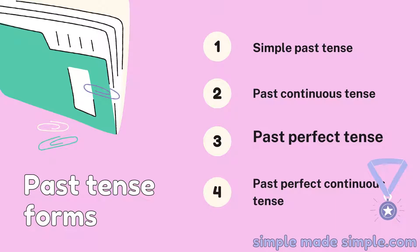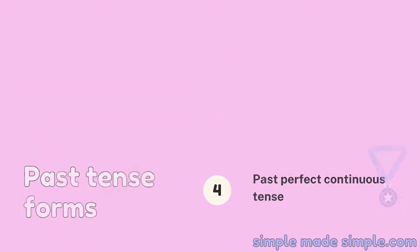There are four forms of past tense. They are simple past, past continuous, past perfect, and past perfect continuous tense.